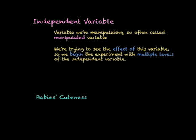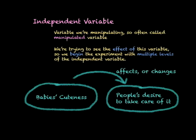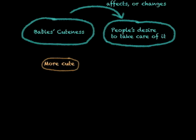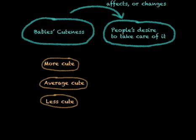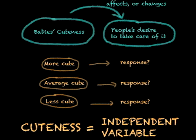In this case, the baby's cuteness is supposed to have an effect on people's desire to take care of it. According to our hypothesis, the baby's cuteness may change people's desire to take care of it. So we begin the experiment with multiple levels of cuteness, and the point of the experiment is to see what effect these multiple levels of cuteness have on people's desire to take care of it. This tells us that cuteness is the independent variable.